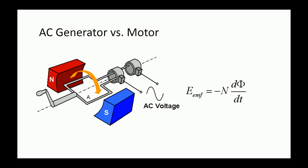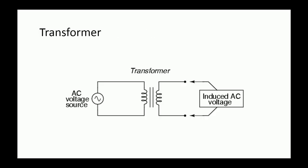The electromotive force E induced in a coil is proportional to the number of turns, shown by letter N, and phi means the area, the surface A enclosed by the coil. AC is also capable of powering electric motors. Motors and generators are essentially the same device, but motors convert electrical energy into mechanical energy. This is useful for many large applications like dishwashers, refrigerators, and so on, which run on AC.